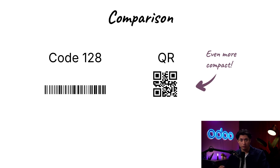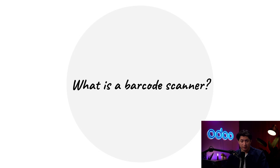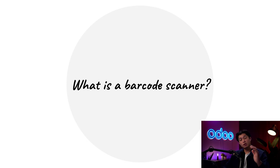We haven't even talked about our newest and fanciest variety of barcodes — the RFID — but we'll cover that in a later video. Now that we're experts on barcodes, let's talk about barcode scanners. We know that barcodes are just text encoded, so a barcode scanner is just a device that reads that encoded text and enters it into your computer — basically it's a fancy keyboard.